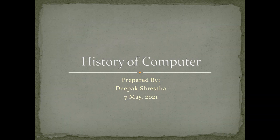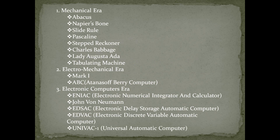The history of computer is divided into three eras: the mechanical era, the electromechanical era, and the electronic computers era. Under the mechanical era we have the abacus, Napier's bones, slide rules, Pascaline, step reckoner, Charles Babbage's difference engine, tabulating machine. Under the electromechanical era we have Mark I and ABC. Under the electronic computers era we have ENIAC, John von Neumann, EDVAC, EDSAC, and UNIVAC one.